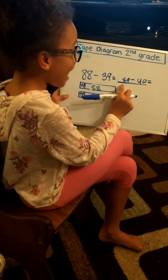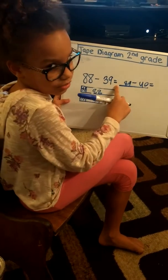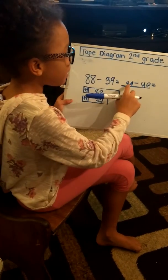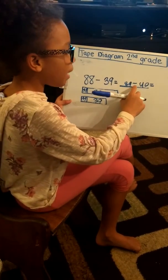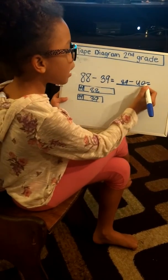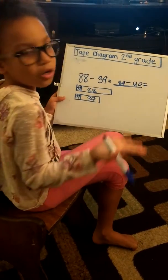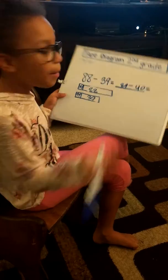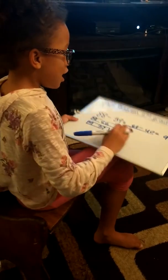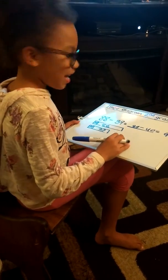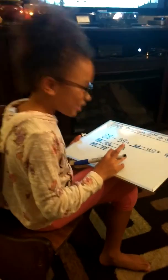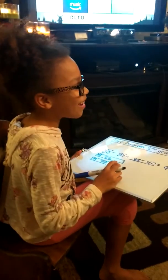I have the equal sign and minus sign still there. So it's going to be 89 minus 40. The ones: 9 minus 0 is 9. And then in the tens place: 8 take away 4.